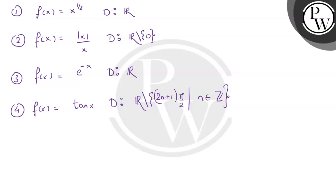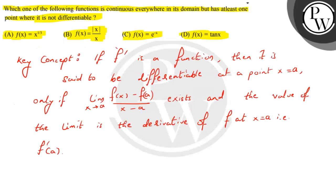Now looking at the options: the question asks which function is continuous everywhere in its domain but has at least one point where it is not differentiable. f(x) equals cube root of x is continuous over its entire domain but is not differentiable at x equals zero, so option A is correct. Option B, mod x by x, is continuous and also differentiable (derivative equals zero) over its entire domain — incorrect. Option C, e^(-x), is continuous and differentiable over its entire domain — incorrect. Option D, tan x, is continuous and differentiable over its domain — also incorrect. The correct answer is option A.